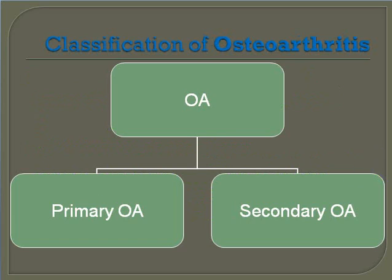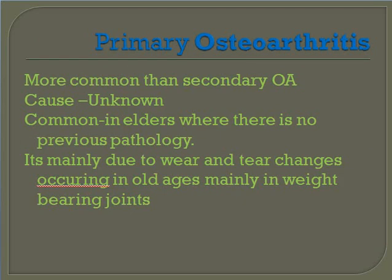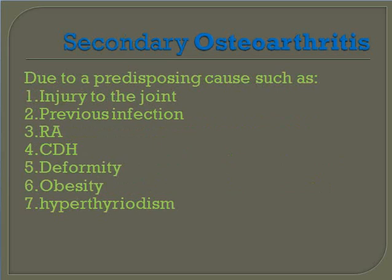Classification of osteoarthritis: primary osteoarthritis and secondary osteoarthritis. Primary osteoarthritis is more common than secondary osteoarthritis, with cause unknown. It is common in elders where there is no previous pathology.